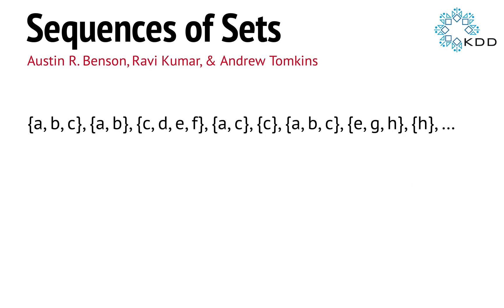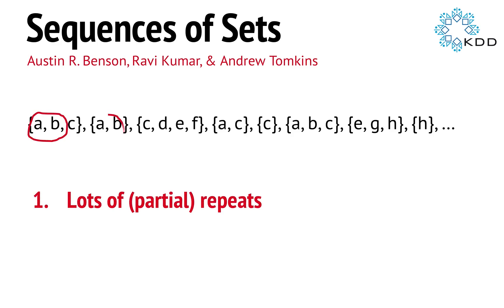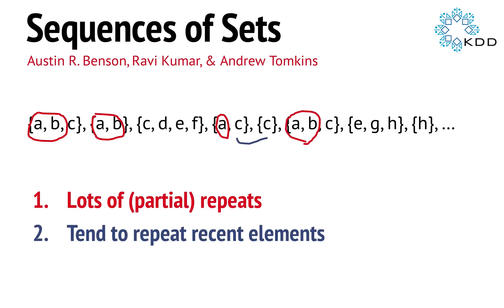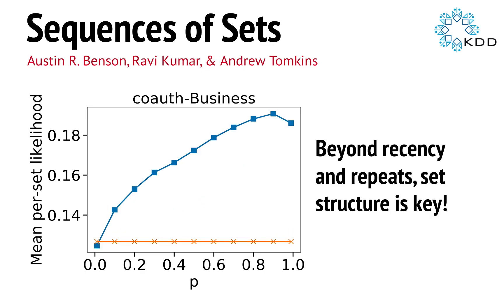There are a couple of things we notice when modeling sequences of sets. The first is that there are lots of partial repeats — elements a and b show up several times. The second is that we tend to repeat elements from the recent past, as seen with element c. We use these facts along with a model that takes into account set structure and the fact that elements in sets tend to appear together a lot, to develop a model that predicts which new sets will occur in the future.